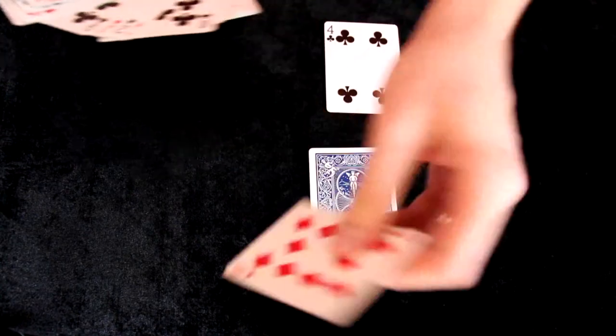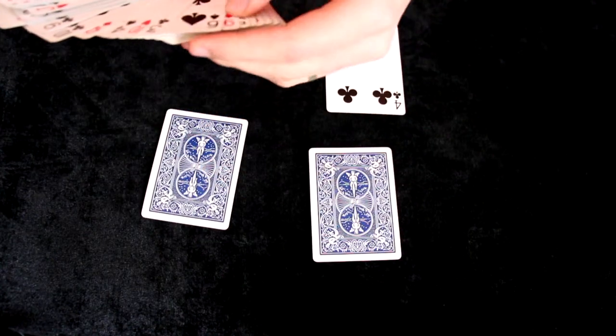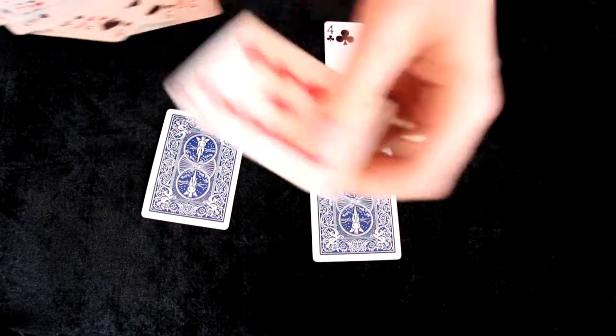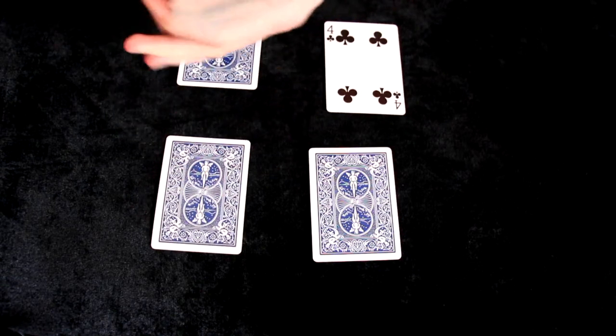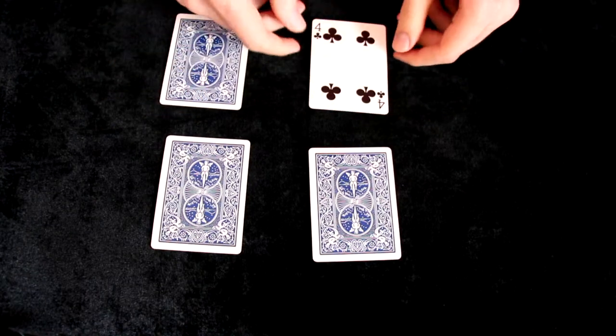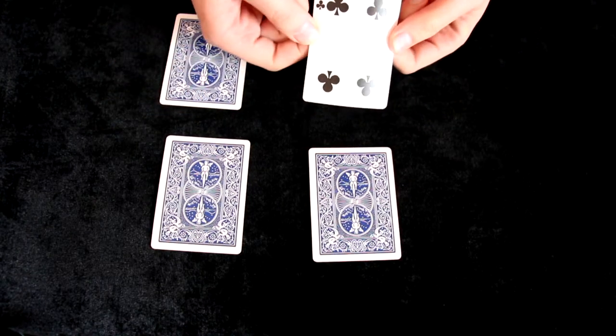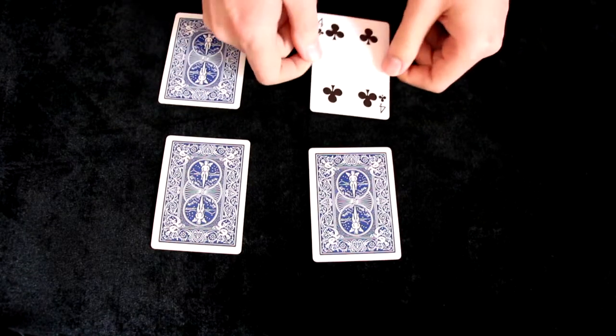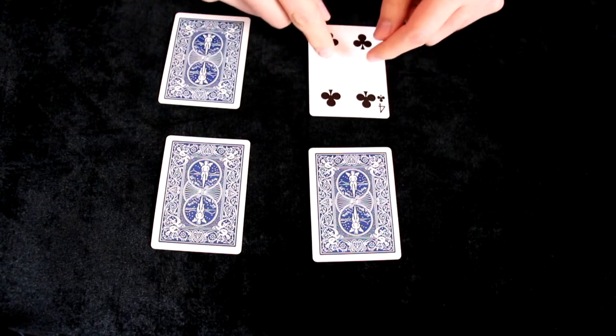So I will select this, this and for example this one. Okay, now I can get rid of the rest of the deck. I will not need it and I need to remember where I put the selection that was made by a spectator. So in this case it is here.